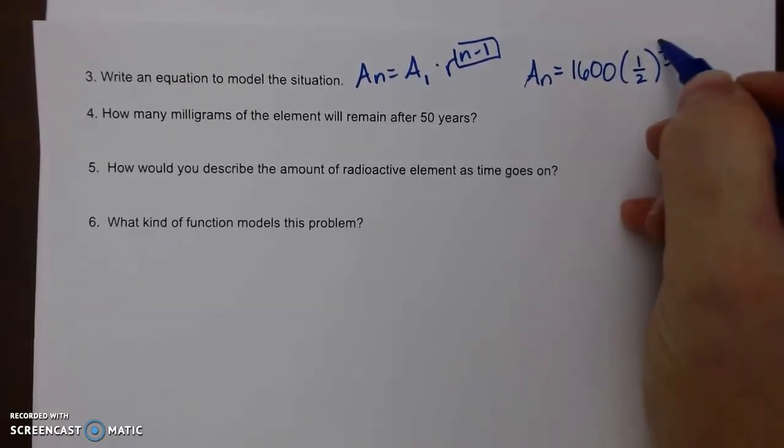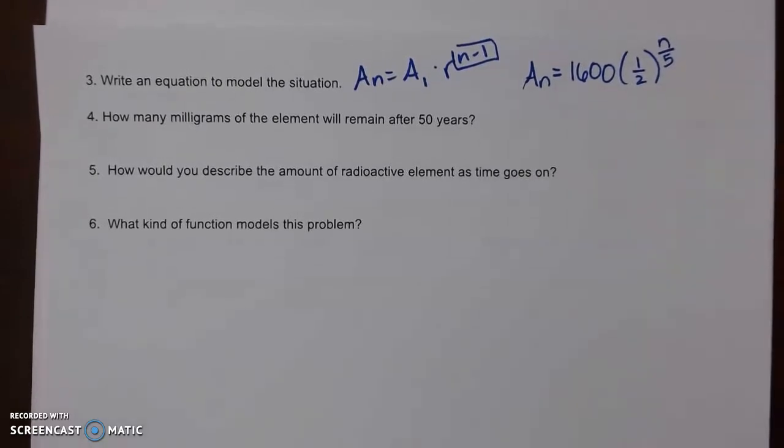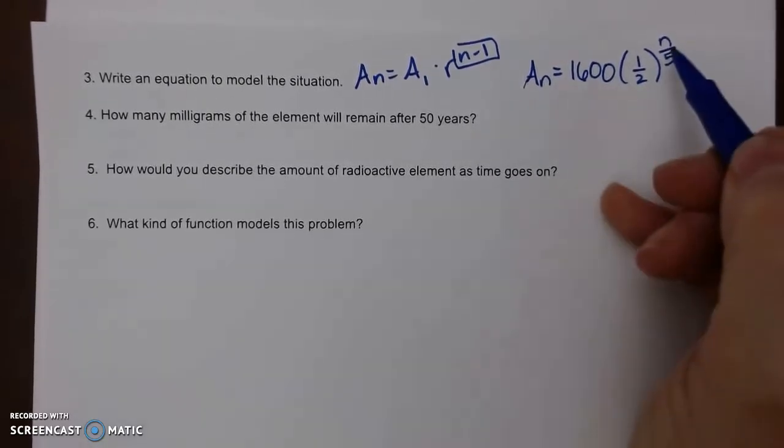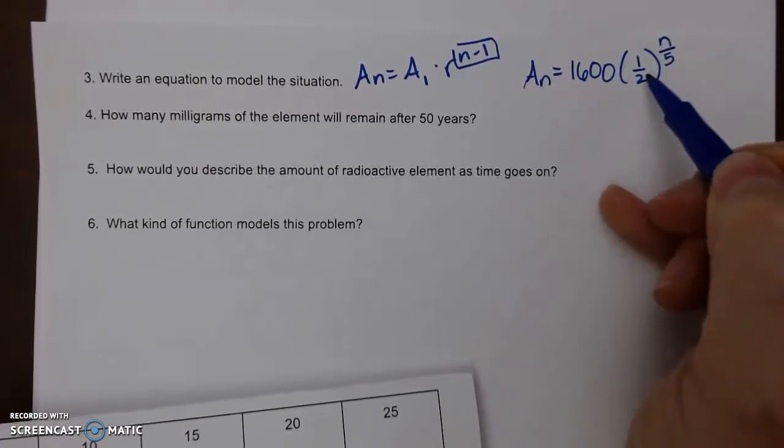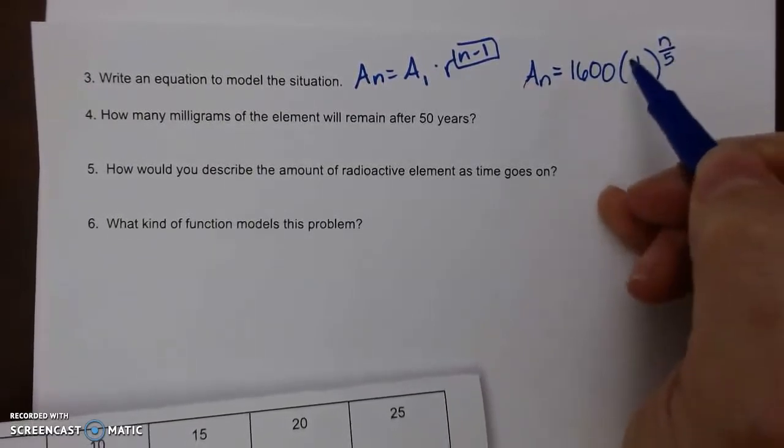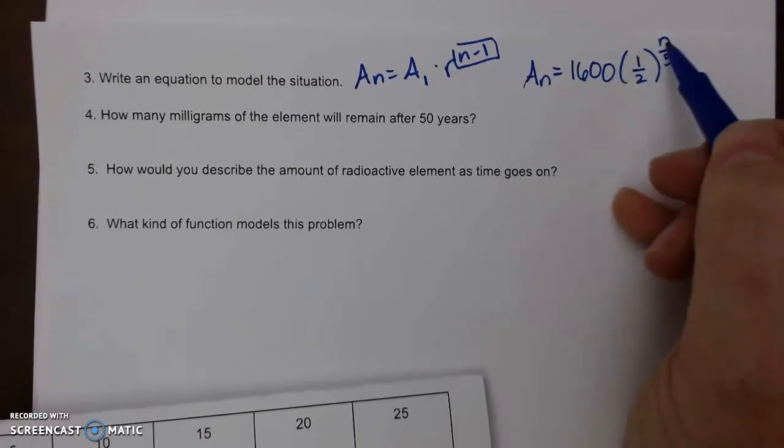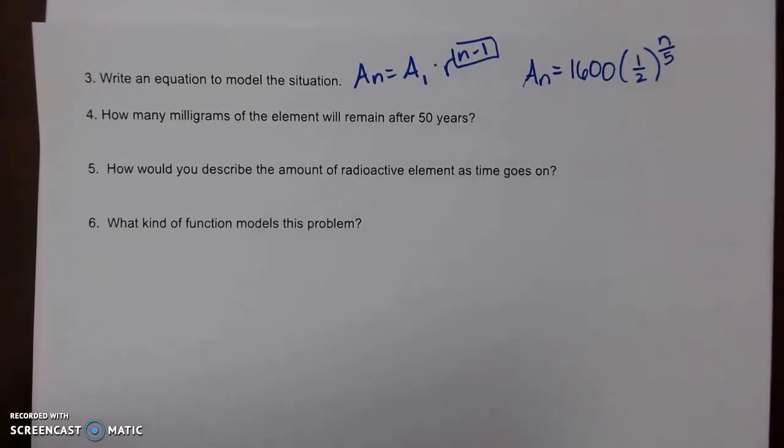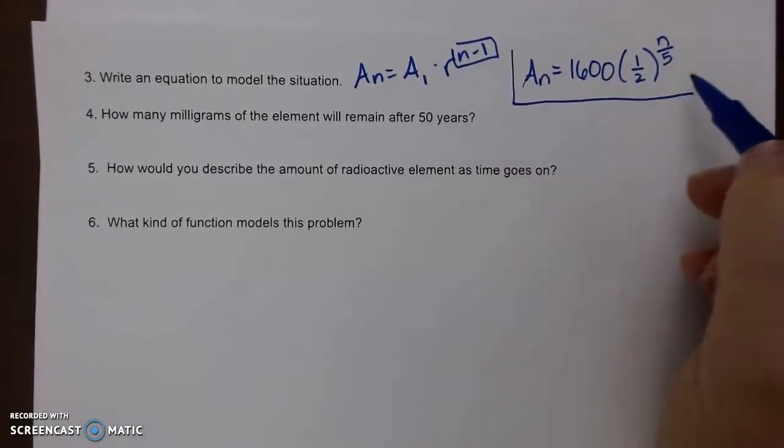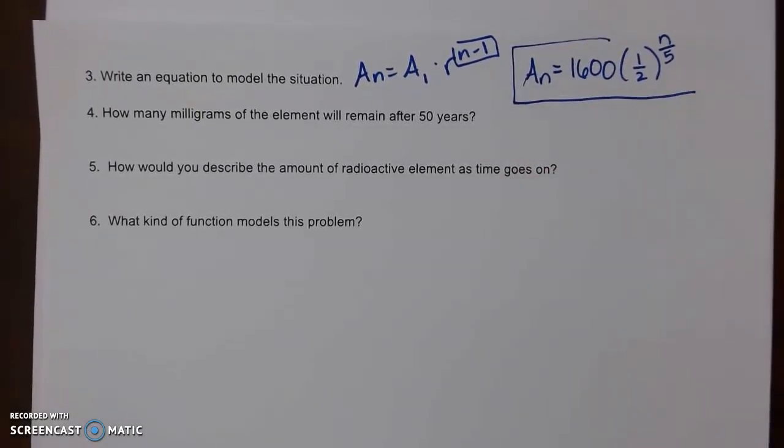Now there will be some adjusting. If I plug in, our first is zero, so one-half to the zero is one, one times 1600. When I plug in five, five divided by five is one, one-half to the one times 1600, that gives it to us. So this is our general formula.